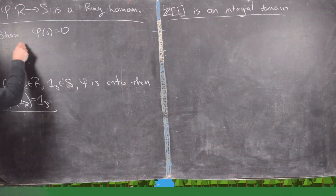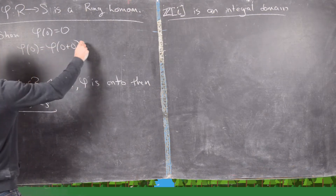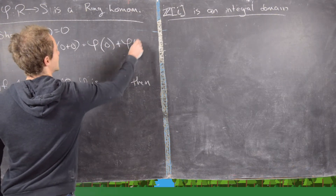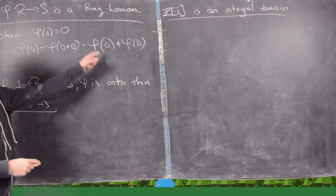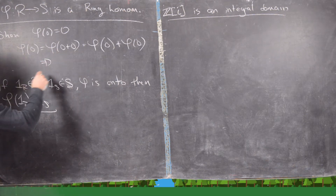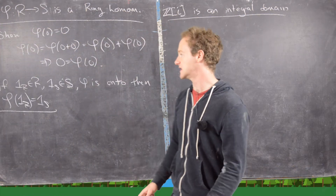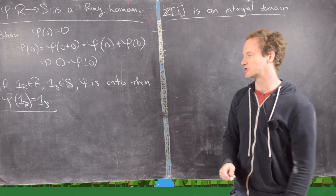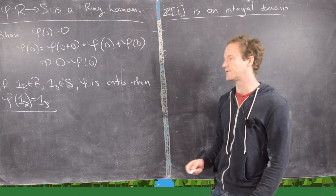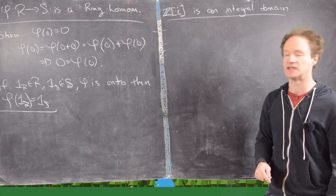Notice that phi of 0 equals phi of 0 plus 0, which equals phi of 0 plus phi of 0. Subtracting phi of 0 from both sides cancels everything on the left, giving 0 equals phi of 0. Next, we want to show that if R and S have identities and phi is onto, then the identity in R must be mapped to the identity in S.